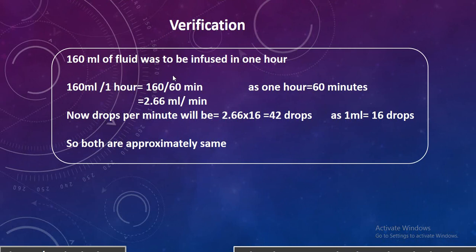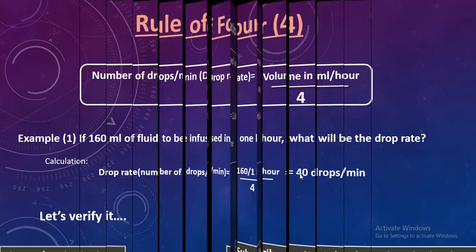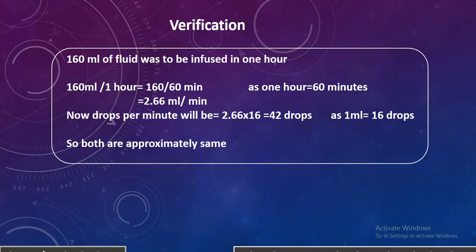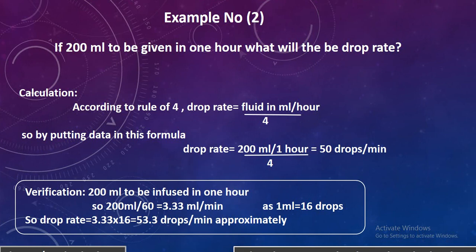Let's verify whether that is correct. 160 mL of fluid to be infused in one hour: 160 mL divided by 60 minutes gives 2.66 mL per minute. We then convert milliliters into drops: 2.66 mL multiplied by 16 drops per mL comes out to be 42 drops per minute. So 42 drops versus 40 drops — both are approximately the same, confirming the Rule of 4.